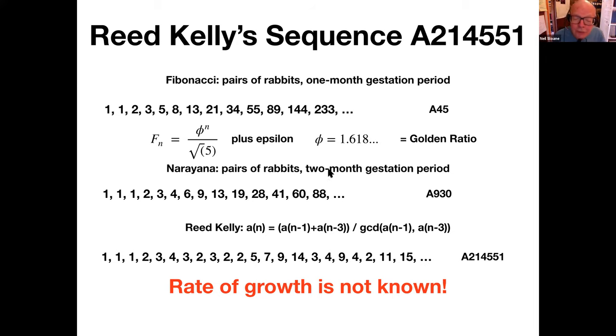Those are the well-known Fibonacci numbers. If it takes two months for a pair of baby rabbits to have their new babies, then we get Narayana's sequence. You get it by starting one, one, one. And then each term is the sum of the previous term and the term that's two back. So we get one plus one is two, one plus two is three and so on. It grows like that. And it's very like the Fibonacci numbers. There's a very simple, explicit formula for the nth term.